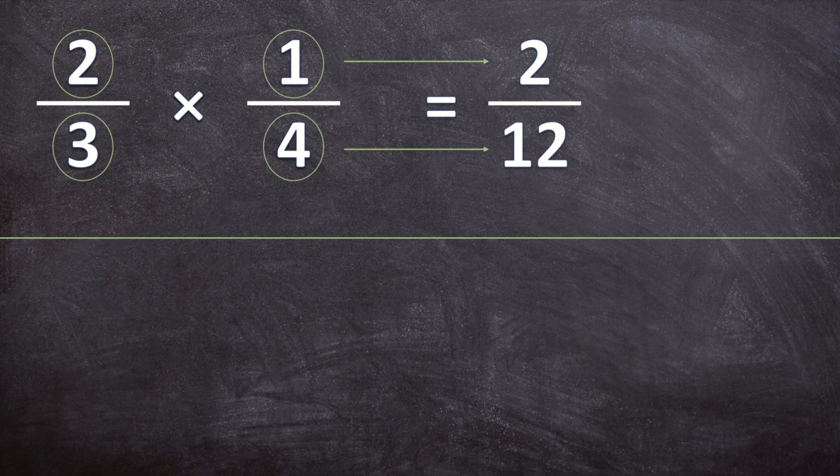Remember it doesn't matter if you're adding, subtracting, multiplying or dividing fractions you always need to simplify your answer. So how do I simplify my answer? I divide by the greatest common factor between the numerator and the denominator and they both can be divided by 2. So our final answer is going to be 2 divided by 2 is 1 over 12 divided by 2 is 6.